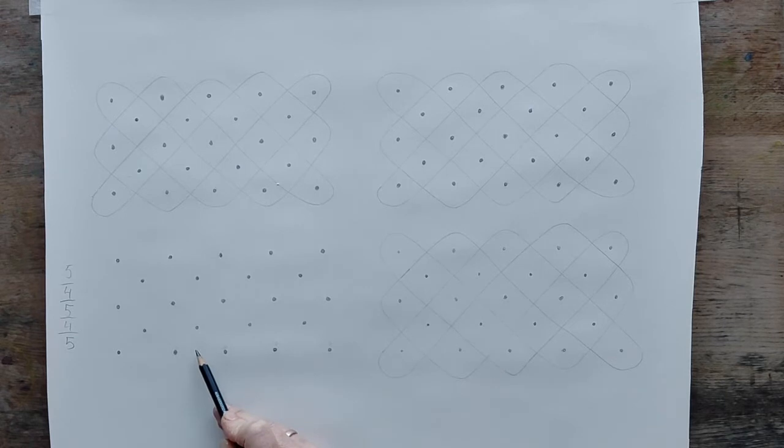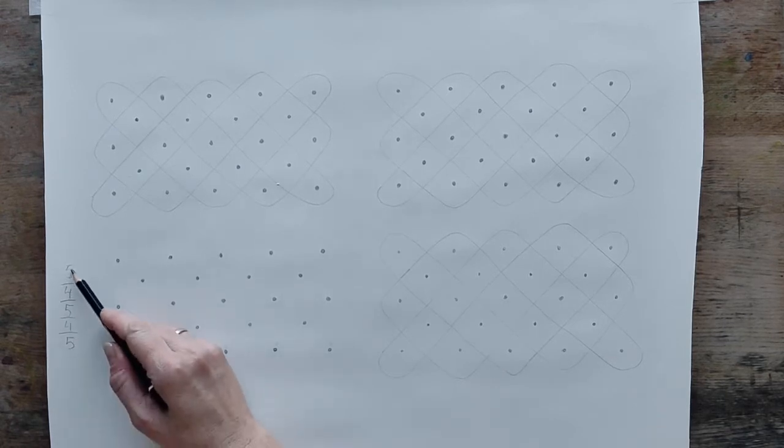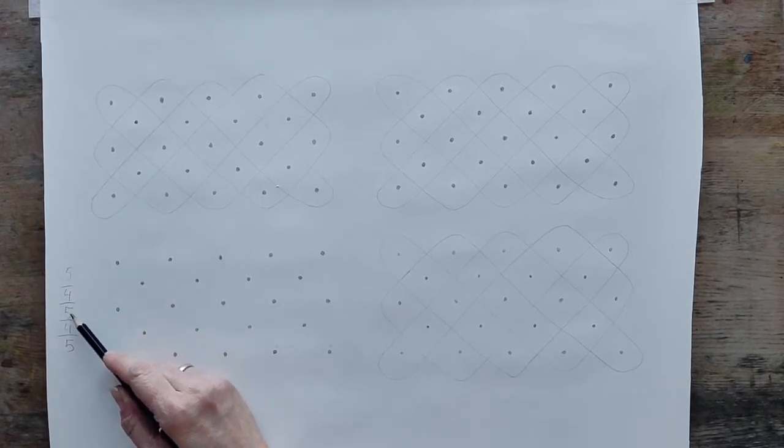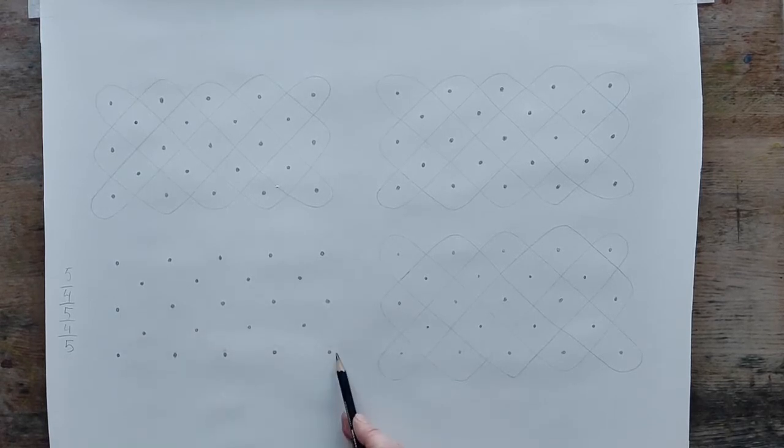So this has become a six-stranded ribbon. And it's the same number that we're using. So it's 5, 4, 5, 4, but with an added five dots underneath.